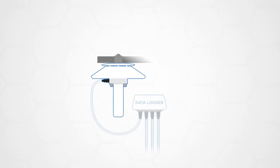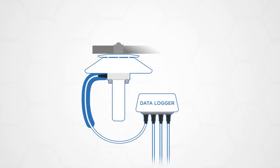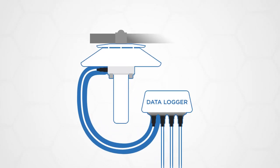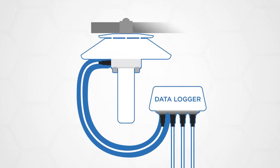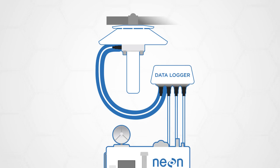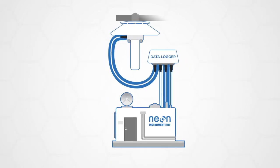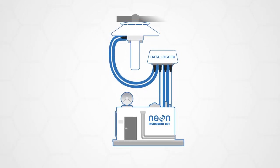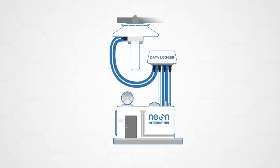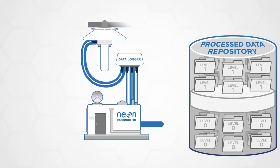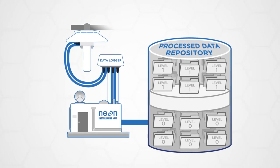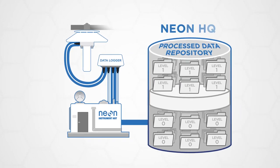As part of the sensor-to-network interface, a data logger receives measurement data from the sensors and transmits it to an on-site server in an instrument hut. These raw level zero data are automatically sent back to the process data repository at NEON headquarters in close to real time.